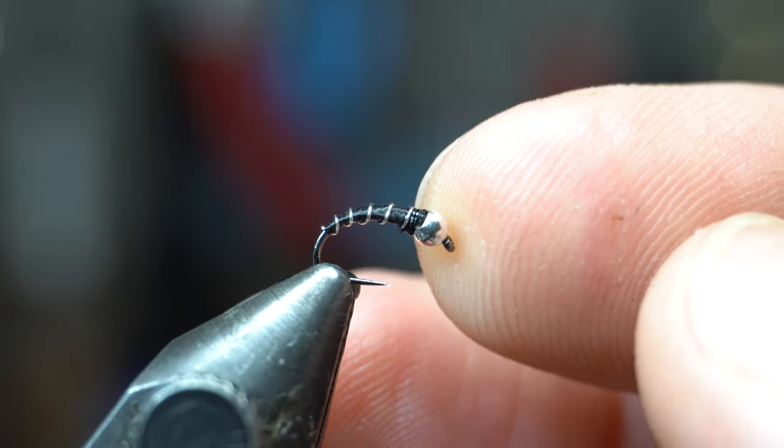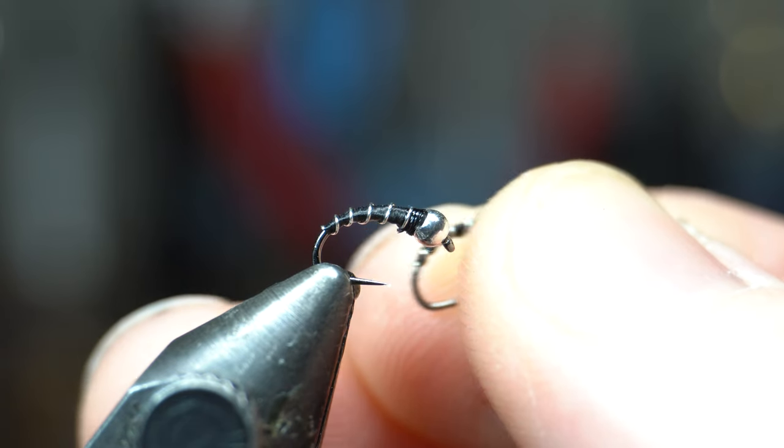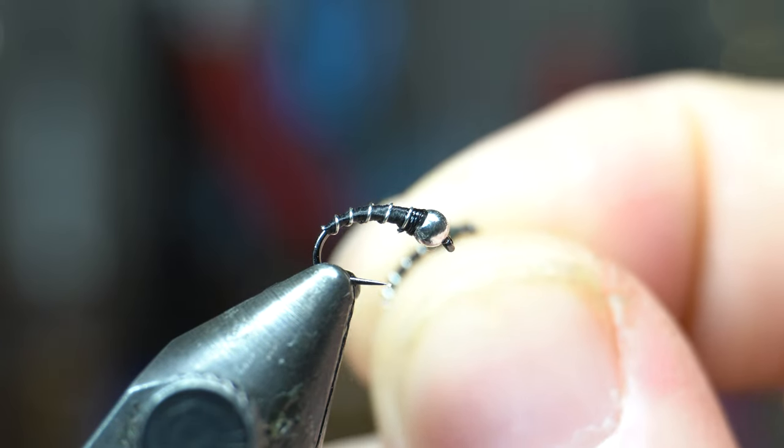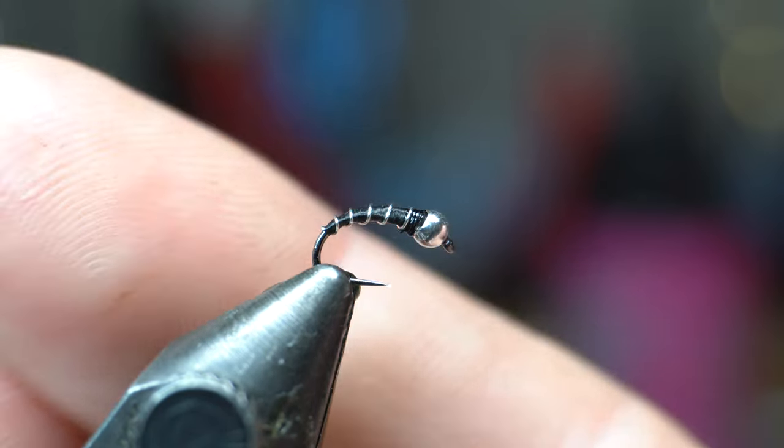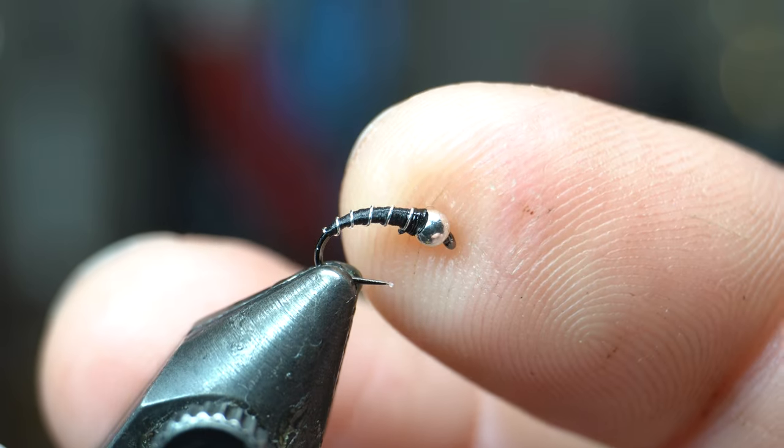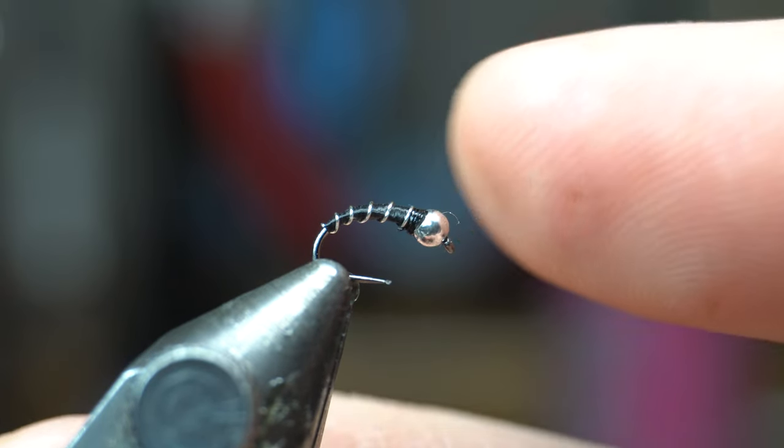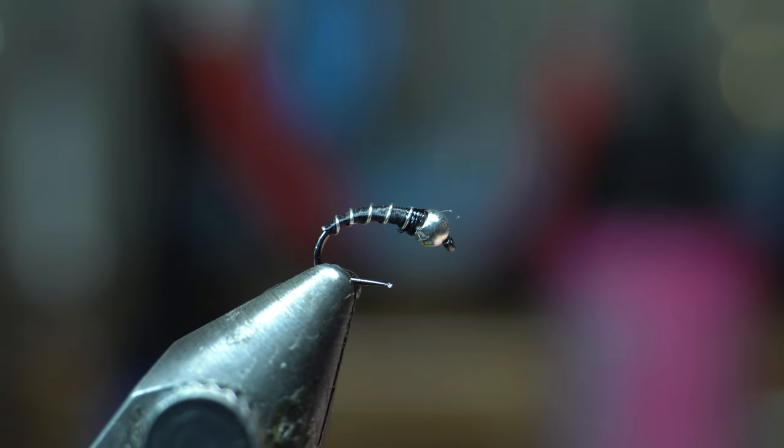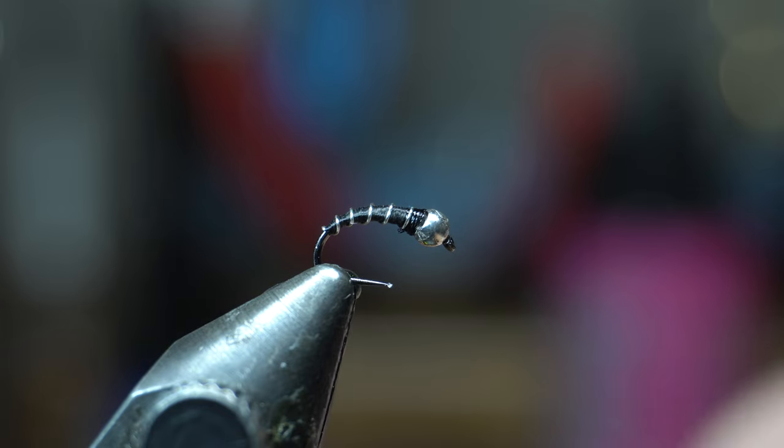These are really good for fishing this and then dropping something like this on the back, that black beauty on the back of it. That way this gets it down and then the black beauty is back behind it. You've got both an emerging and a pupa pattern. They work great. I used to fish this a lot in the San Juan—mostly the black beauty, but I would do this as well if I wanted to get down a little further and I didn't want to use lead.